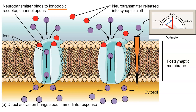There are two factors we should consider when determining the response of the postsynaptic neuron. First, what type of ion is permeable through these ligand-gated ion channels? Second, how much neurotransmitter is available in the synaptic cleft?